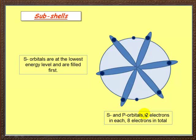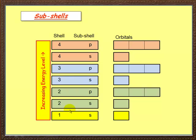S-orbitals are the lowest energy levels and are filled first. So this energy level here, the round one, would be filled before any of these p-orbitals. The round ones get filled before these p-orbitals.